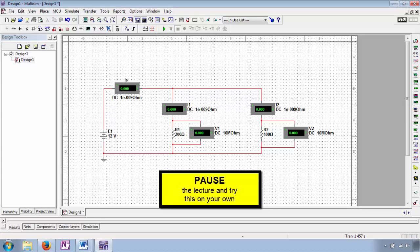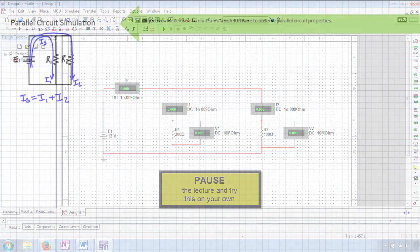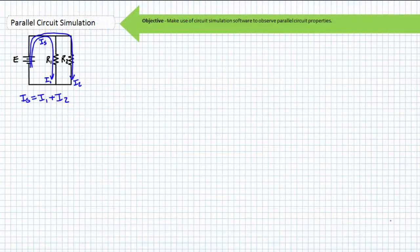Pause the lecture and solve for source current, the current through each component, and the voltage across each component. Here's how I'm going to solve for the desired unknowns — you might have used different steps in a different order, but ultimately our answers should agree. Using the most fundamental property of parallel circuits, voltage across all components hooked in parallel is the same: E equals V1 equals V2, and they all equal 12 volts.